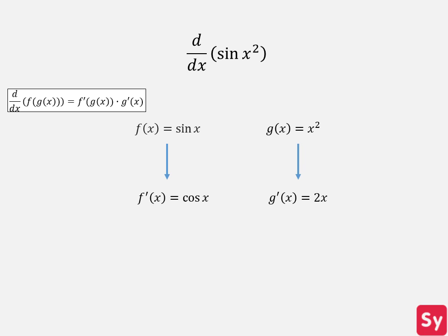Now we start plugging in values into the chain rule. The derivative of the function is equal to f prime of x squared times g prime of x. We plug in the respective derivatives and get cosine of x squared times 2x — our answer.